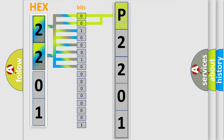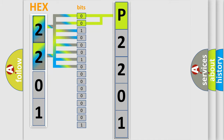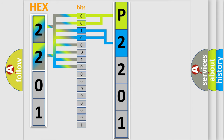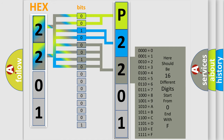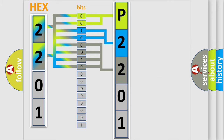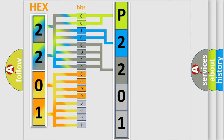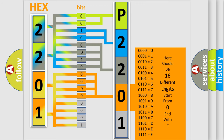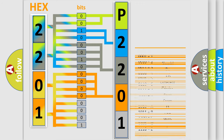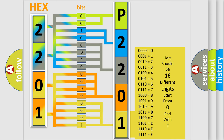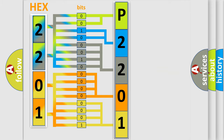By combining the first two bits, the basic character of the error code is expressed. The next two bits determine the second character. The last bits of the first byte define the third character of the code. The second byte is composed of a combination of eight bits — the first four bits determine the fourth character, and the last four bits define the fifth character. A single byte conceals 256 possible combinations.